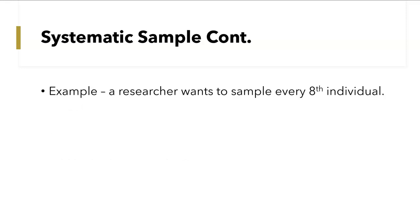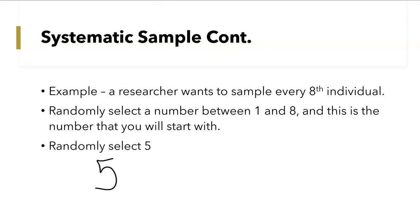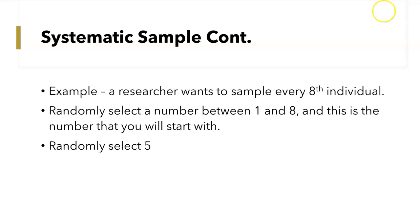So for example, a researcher wants to sample every 8th individual. You will randomly select a number between 1 and 8, and that is the number you start with. So if we randomly select 5, the 5th individual will be the first person. We're taking every 8th individual, so you add 8 to that: the 13th individual is next, then 21, then 29, and you keep going. You first randomly select the number between 1 and K, then add K each time: 5 plus 8 is 13, 13 plus 8 is 21, 21 plus 8 is 29.